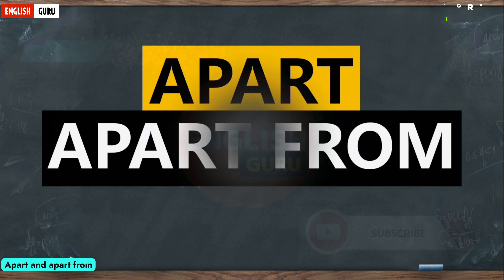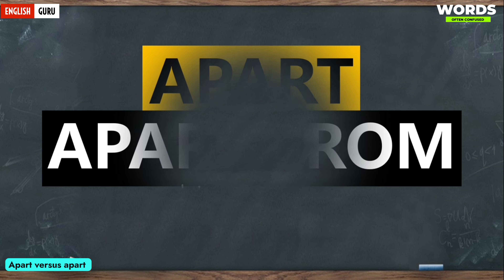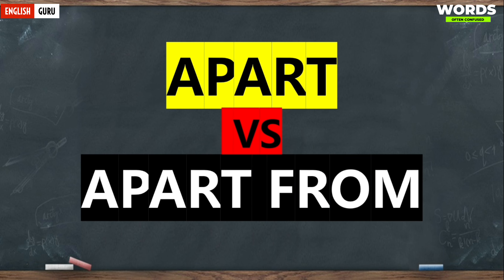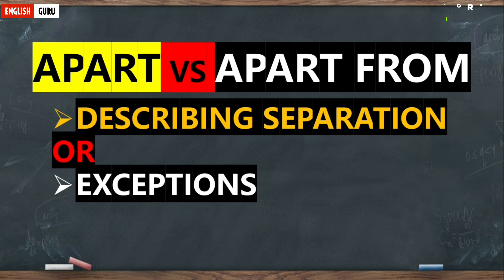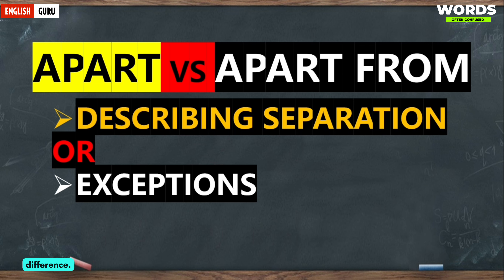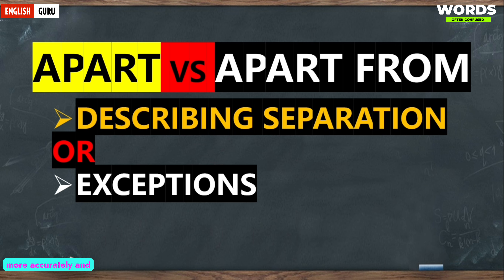Apart and apart from — apart versus apart from. These two words are used when describing separation or exceptions. There is a clear difference between them, and understanding this difference can help us communicate more accurately and precisely.